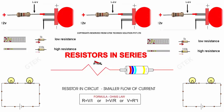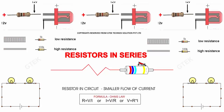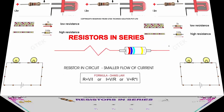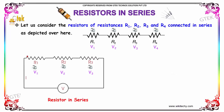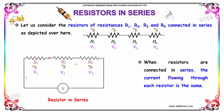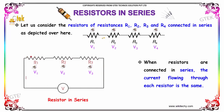Now we will see the resistors in series. Let us consider the resistors of resistances R1, R2, R3, and R4 connected in series, which is depicted here.